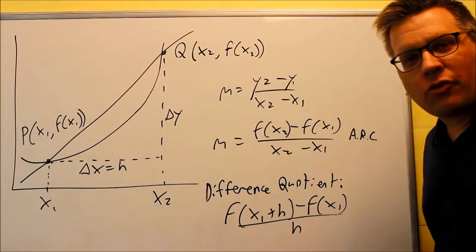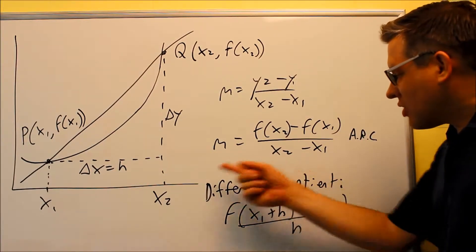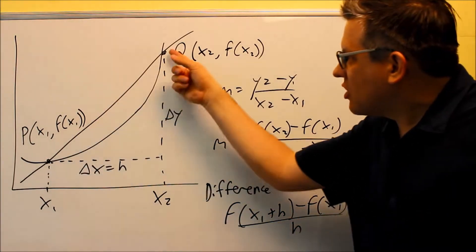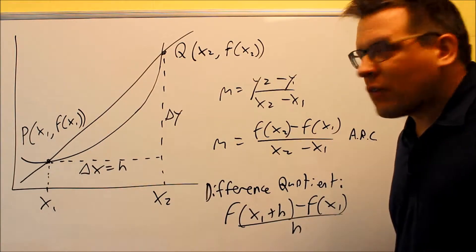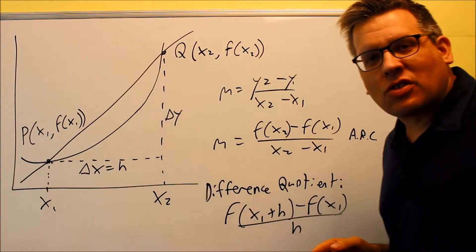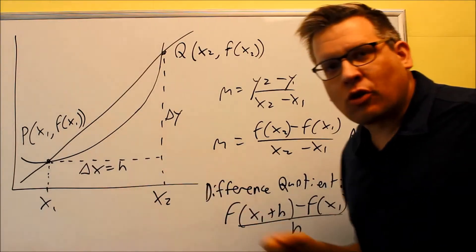Now one formula that may look a bit familiar to you is this idea of a difference quotient. So in order to estimate the slope on a curve, we have to get a straight line, and we're going to estimate the slope of the straight line, and that's going to give us an estimate for a slope at a particular point.